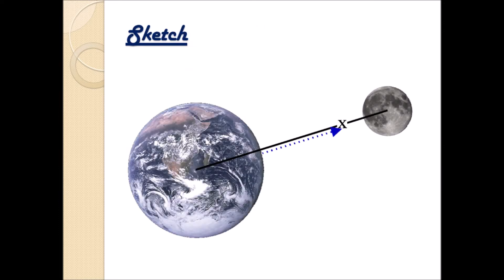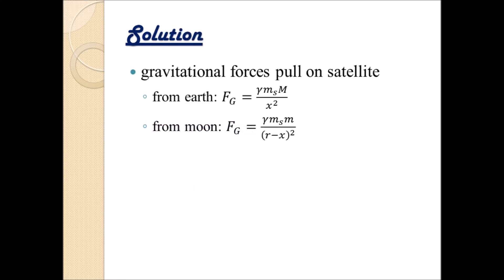So it basically looks like this: we have Earth, we have the Moon, and somewhere in between is point x, and we want to reach it. Basically, we have gravitational forces pulling on the satellite — it's a three-body problem. The satellite has only two other objects pulling on it. On one hand, there's the gravitational force from Earth: F_g equals gamma times m_s times M divided by x squared.